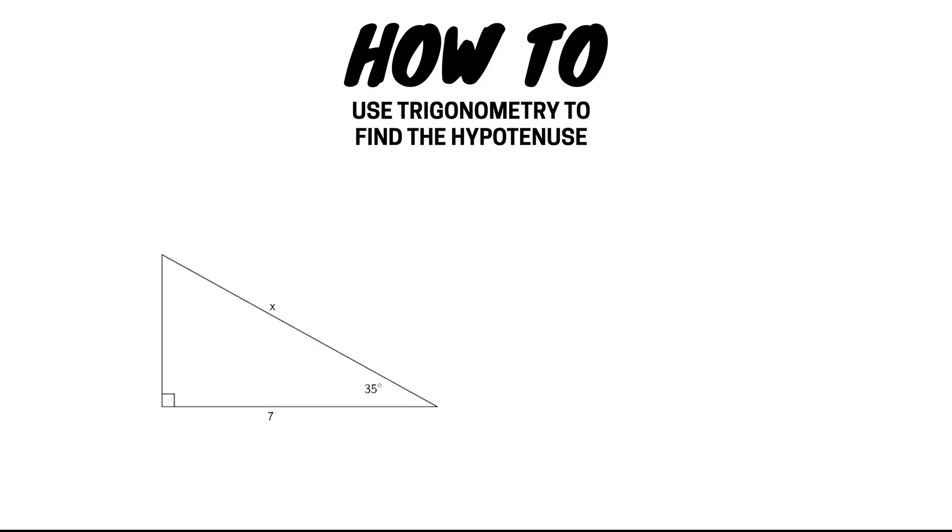In this video we're going to use trigonometry to learn how to find the hypotenuse in a right angle triangle. In this example we've been given a right angle triangle with an angle of 35 degrees, a side length of 7, and we're trying to find the hypotenuse which is labeled x.